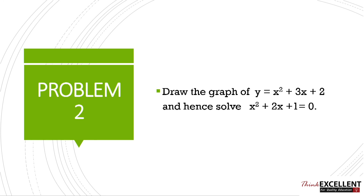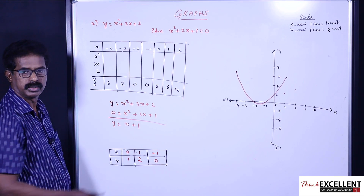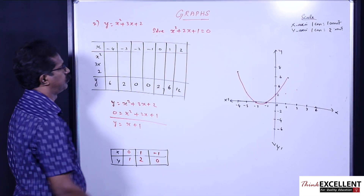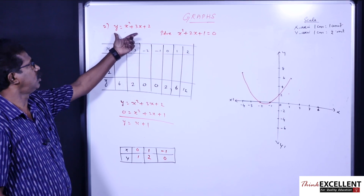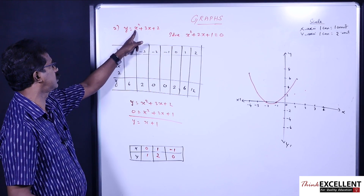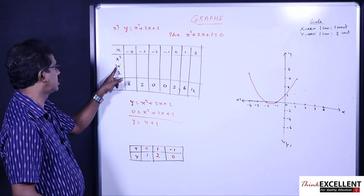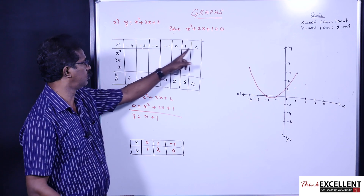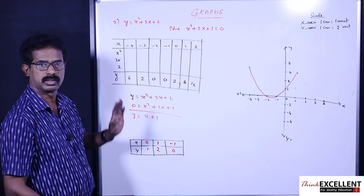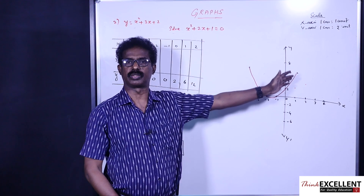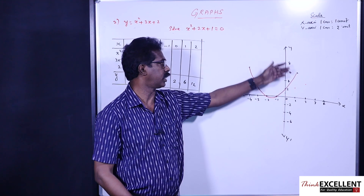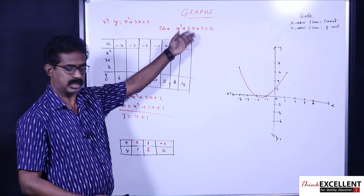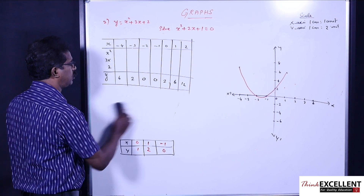Next, question number two: draw the graph of y = x² + 3x + 2 and hence solve x² + 2x + 1 = 0. We have to draw the graph of the first equation and solve the second. For the first part, you make a table with columns x, x², 3x, 2, taking values from x = -4 to x = 2. Based on the table you draw the curve. On the x-axis, one centimeter equals one unit; on the y-axis, one centimeter equals two units.